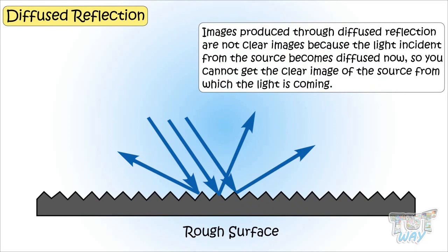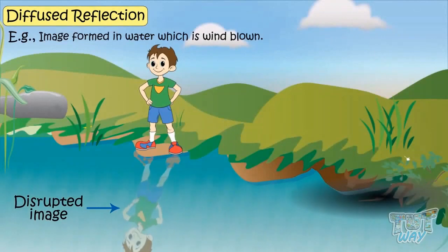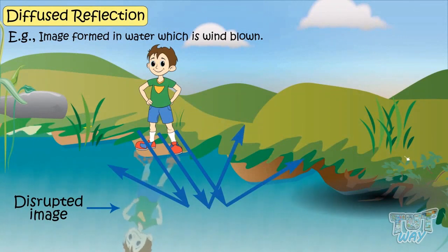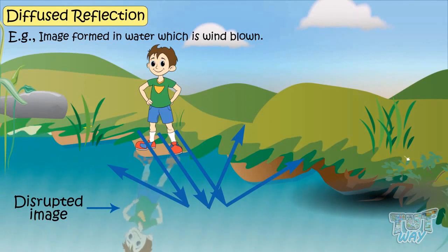Images produced through diffuse reflection are not clear images, because the light incident from the source is diffused. So you cannot get a clear image of the source from which the light is coming. For example, the image formed in water that is windblown is not clear — it is hazy — because the light coming from the source is reflected from the uneven water surface in many directions, and the result is a disrupted image. The reflection from such a rough surface is called diffuse reflection.